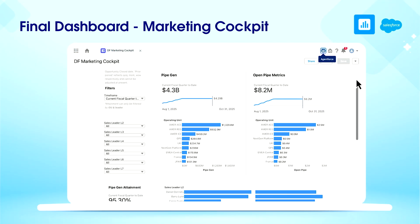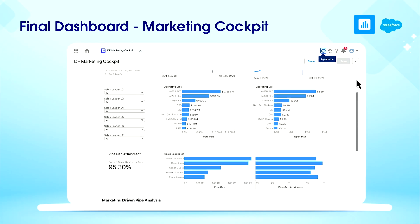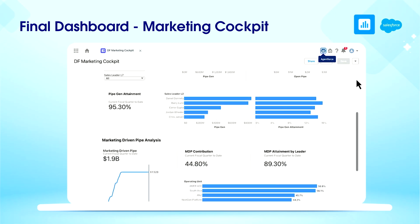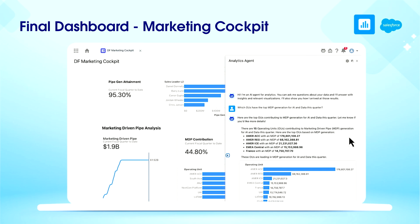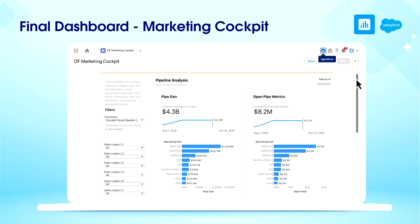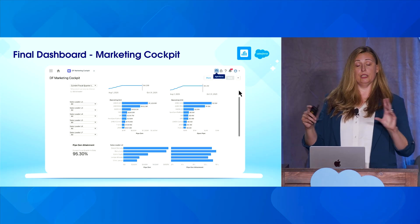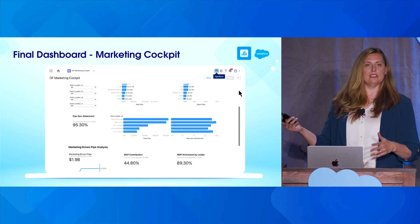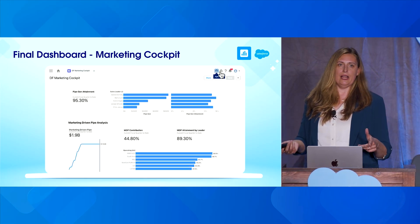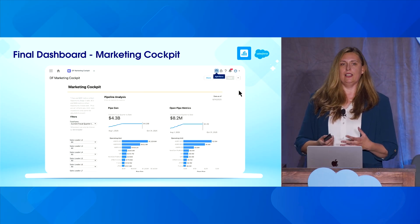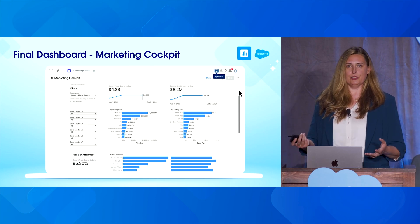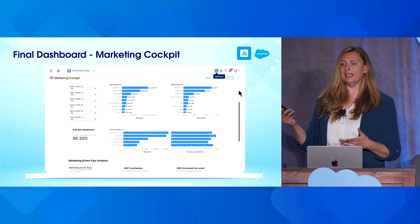Here's our marketing cockpit. You can see it has our pipe gen, open pipe data, attainment metrics, contribution, and marketing-driven pipe. Every KPI and line chart is a metric we've built in our semantic model, and every bar chart is a viz we've built. All of these are interactive — a user can drill in to metrics or create copies of visualizations and customize them. You'll notice we have very few filters; we designed this to take advantage of the concierge experience, addressing the most common questions while relying on the agent for more custom or niche requests.